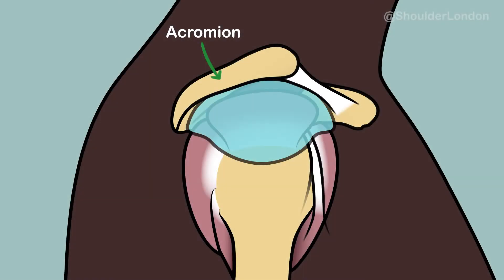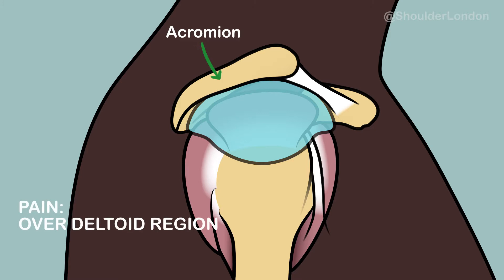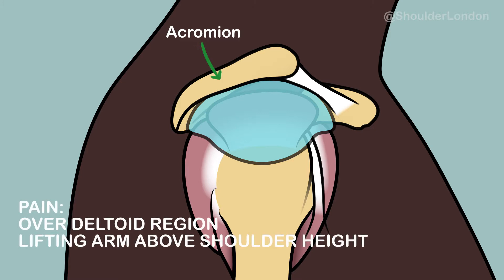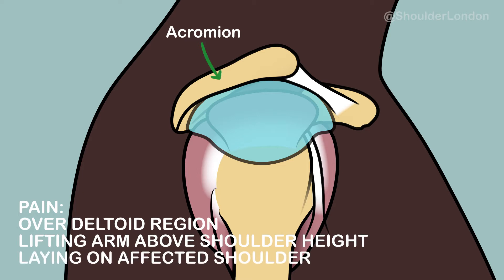Subacromial shoulder pain is an umbrella term for conditions that cause pain on the outside of the shoulder. Patients normally complain of pain over the deltoid region, pain with lifting the arm above shoulder height, and pain laying on the affected shoulder.